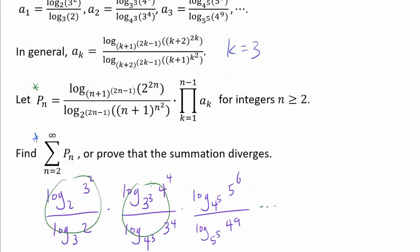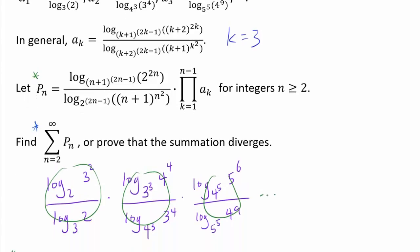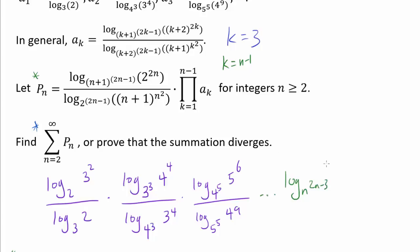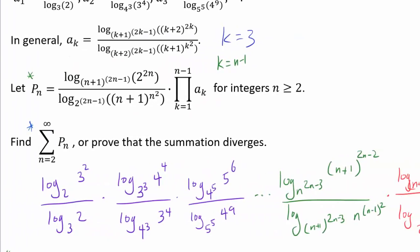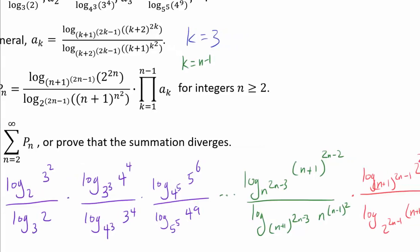I wrote down the values for a sub 1, a sub 2, and a sub 3. We want to go all the way to a sub (n−1). When k is n−1, we get log base n to the (2n−3) power of (n+1) — that is, k+2 or n−1+2 — to the 2k or (2n−2) power, divided by log base (n+1) to the (2n−3) power of n to the (n−1)-squared power. Multiplying by the given expression gives us p sub n, and we want to simplify this as much as possible.